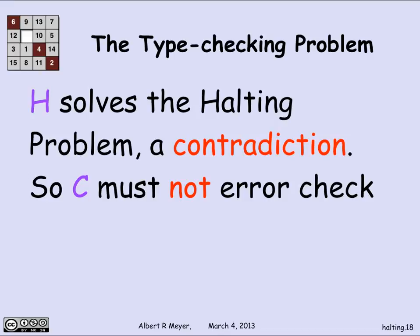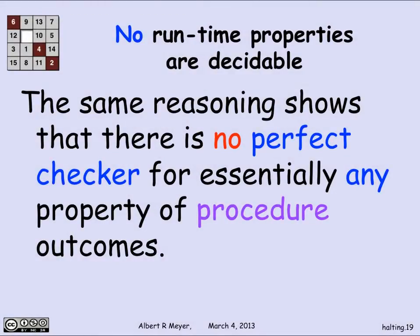That is an example of how you reason from the halting problem — this self-referential question of whether a string procedure applied to its own definition halts or not — and apply it to all sorts of questions and properties of procedures that we really care about. The same reasoning shows it's not just type checking; there's more or less no perfect checker for any kind of property that procedure outcomes might exhibit. This is why theoretical computer scientists have great respect for diagonal arguments — they crystallize a whole set of absolutely logical, intrinsic limitations on the power of computation.